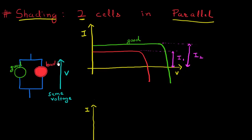Adjacent to that, I have my bad cell in red. Let's say this cell had some shading issues — it was partially covered with a leaf. What that resulted in is this IV characteristic drawn in red, which I'll call my bad IV characteristics. Because of this shading, there was a drop in the short-circuit current of the cell, and also as a result of that, there was a drop in the open-circuit voltage of this bad cell.